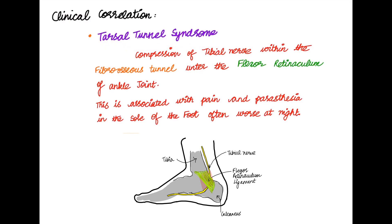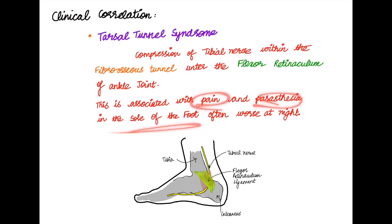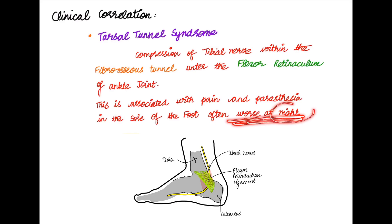Coming to the clinical correlation of the tibial nerve, we have tarsal tunnel syndrome. Similar to carpal tunnel syndrome in the hand, in our ankle we also have the flexor retinoculum. When the tibial nerve is compressed in the flexor retinoculum of the ankle joint, it is associated with pain and paresthesia in the solar foot, often worse at night.